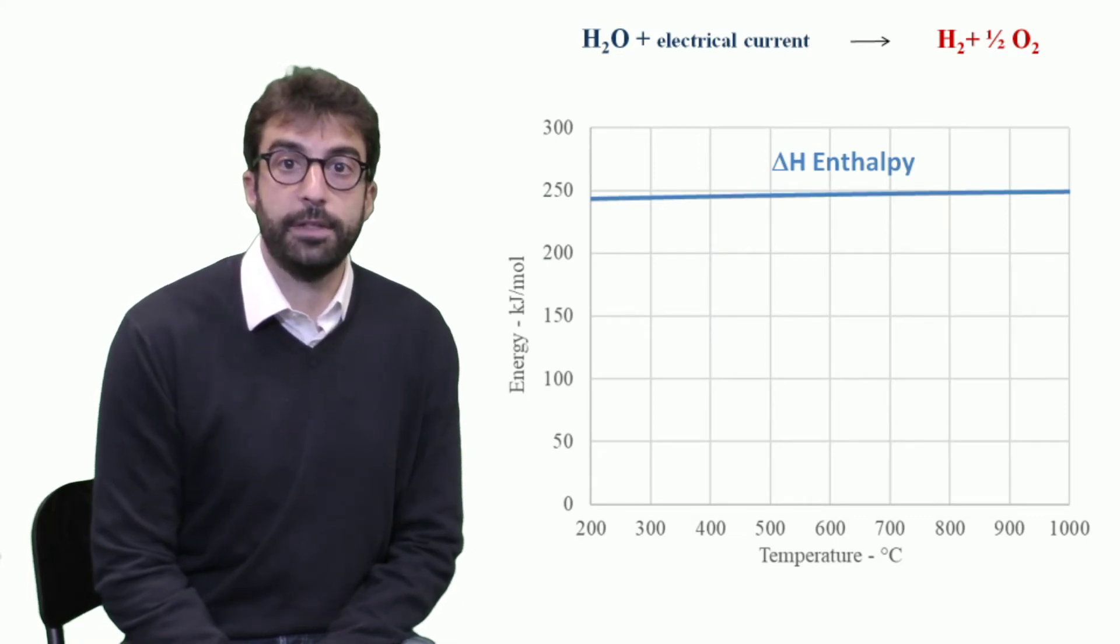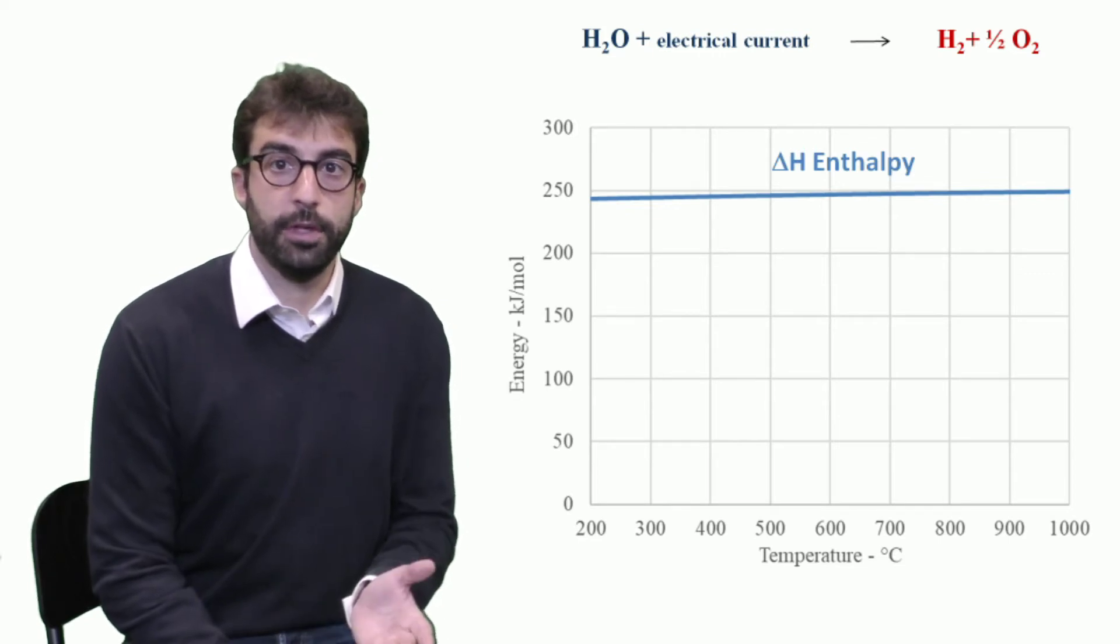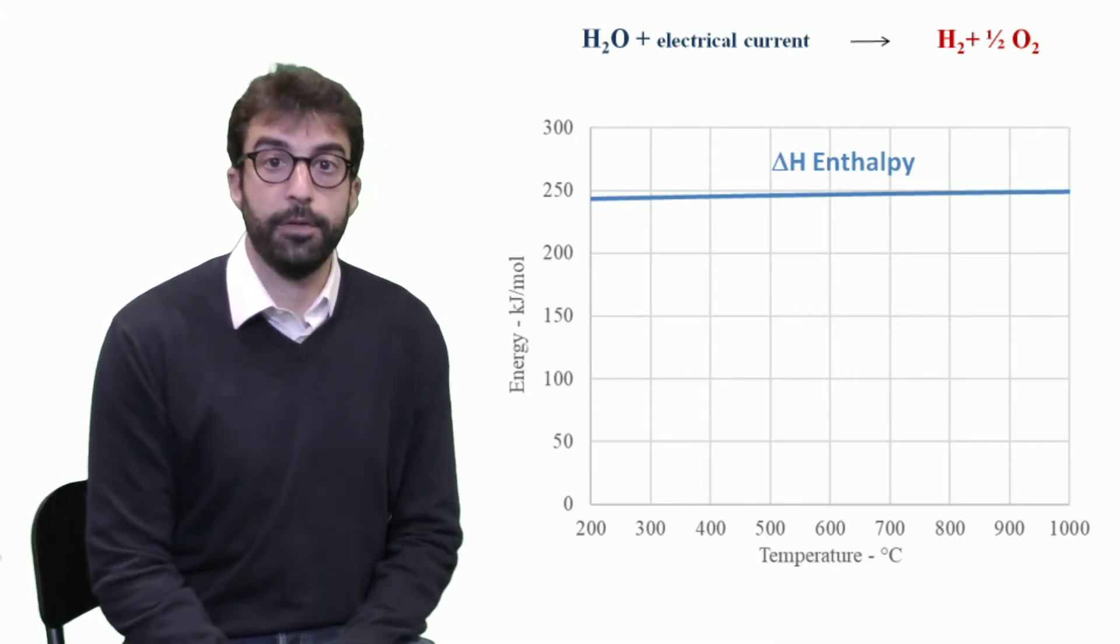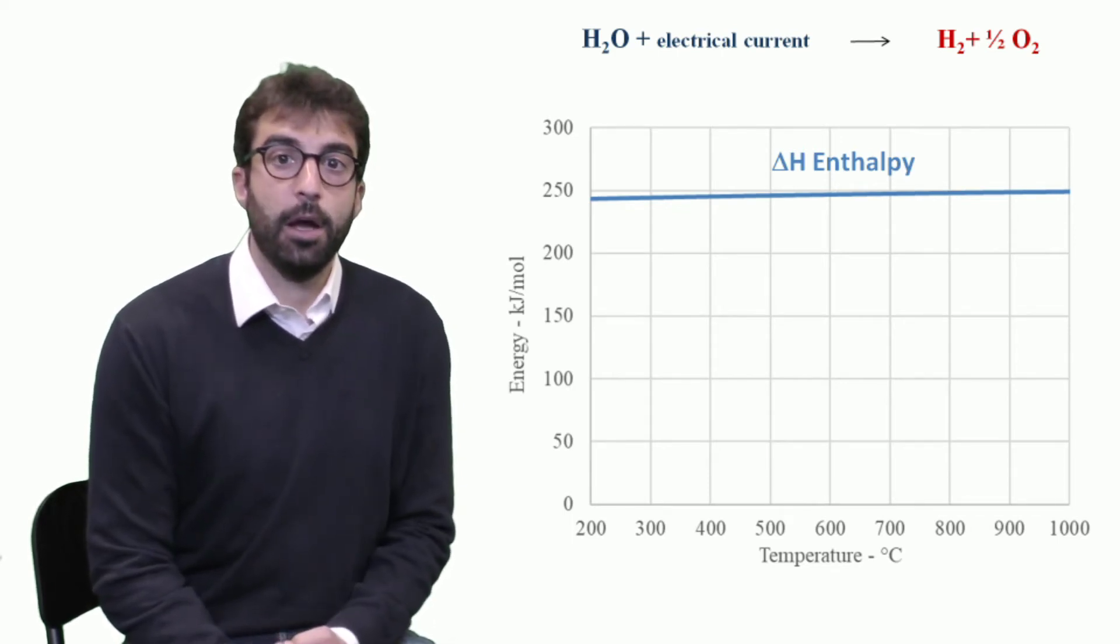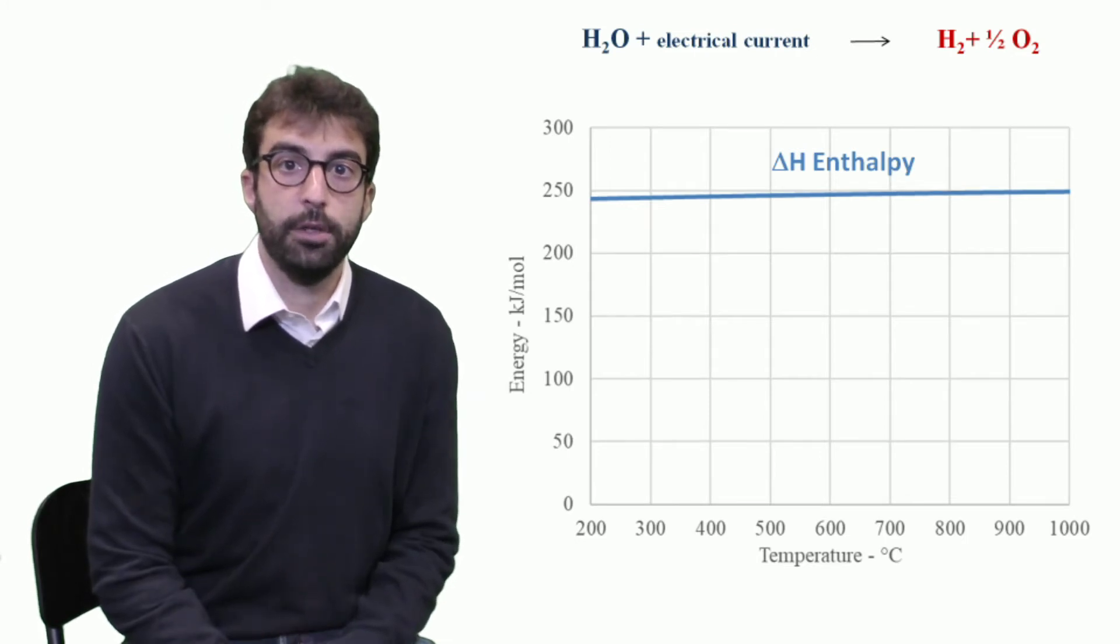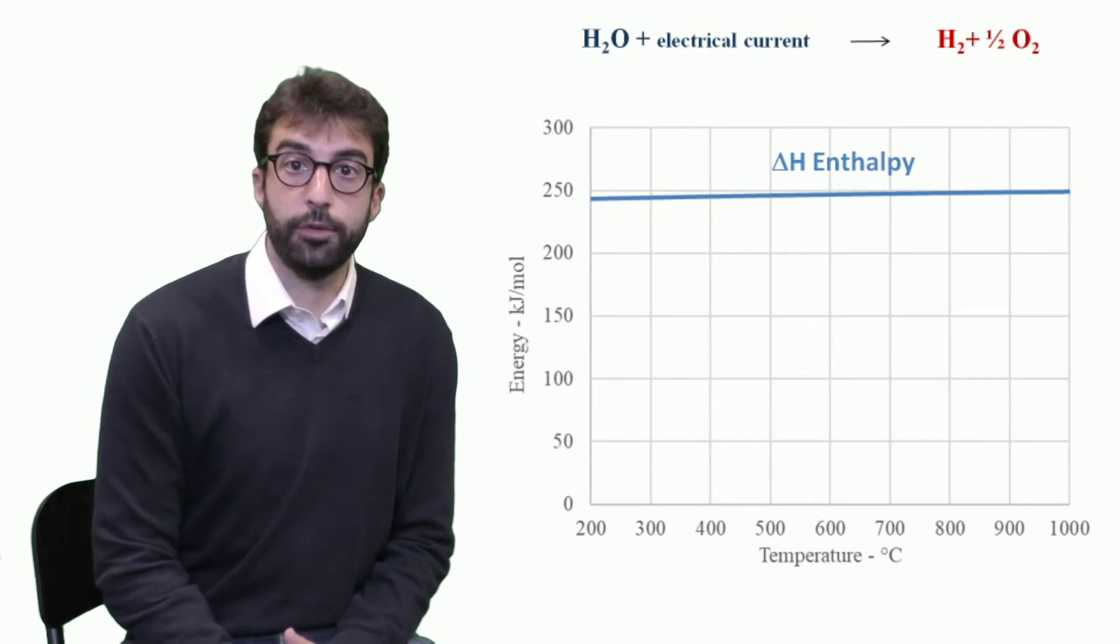So what happens if we increase the temperature of the reaction? As shown in the figure, the total enthalpy difference of the reaction increases when we move, like in the example of the graph, from 200 degrees to 1000 Celsius degrees. So this means that we need more energy to separate hydrogen from oxygen at higher temperature. So apparently there is no big advantage of moving from low temperature to high temperature, from water to steam electrolysis.